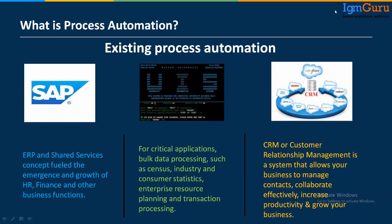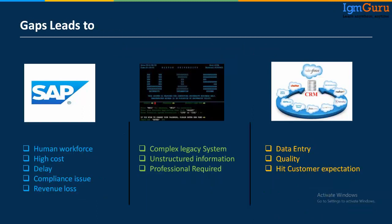Earlier, before process automation, there was paperwork, or some organizations maintained Excel spreadsheets and notepads. There are challenges when working this way. For example, if you work on a Mainframe, you need a professional who understands Mainframe. For SAP, you need someone who knows SAP — not for development, but just for adding data. There are quality issues when adding data, connecting with Mainframe databases, or updating employee details in SuccessFactors. Every organization uses SAP, Mainframe, and CRM.